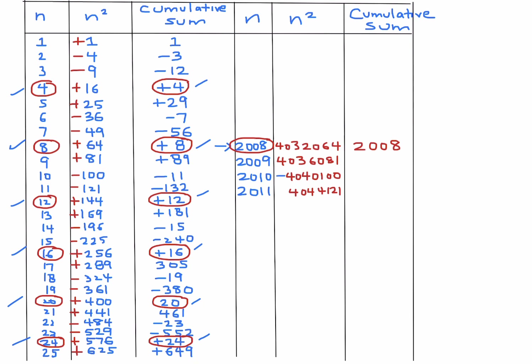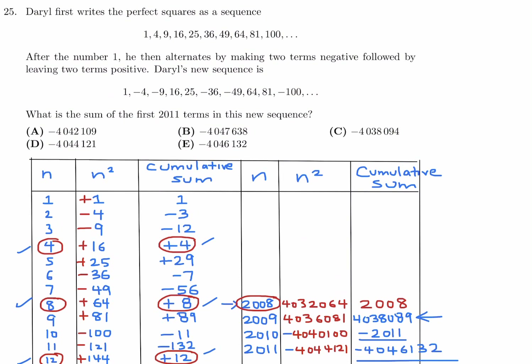Computing the final cumulative sum: start with 2008 (cumulative sum at n=2008), add 2009 squared to get 4,038,089, then add 2010 squared to get a running total, then subtract 2011 squared since its sign is negative. The final cumulative sum comes out to negative 4,046,132. Therefore, number 25, the answer is E.